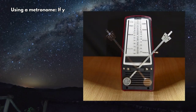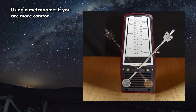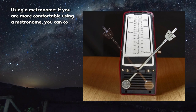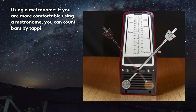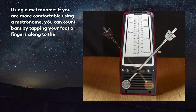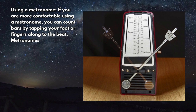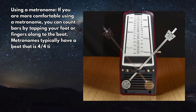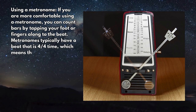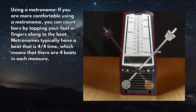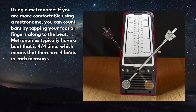If you are more comfortable using a metronome, you can count bars by tapping your foot or fingers along to the beat. Metronomes typically have a beat that is in four-four time, which means that there are four beats in each measure.